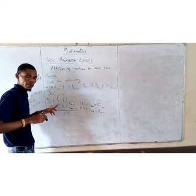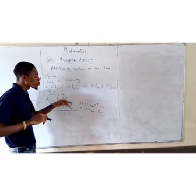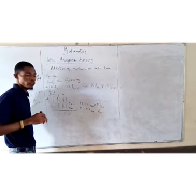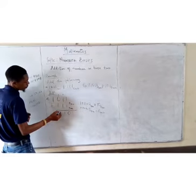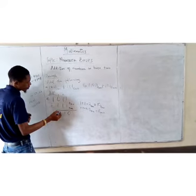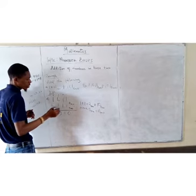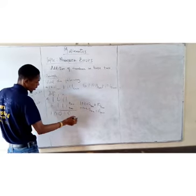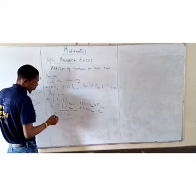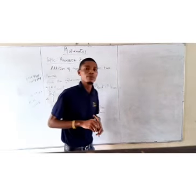So 0 plus 1 is 1, and 1 plus 1 gives us 2 in base 10, which is 10 in base 2 — write down 0, carry 1. Then 1 plus 1 gives us 10 in base 2, so write down 0, carry 1. Our answer is 10010 in base 2.